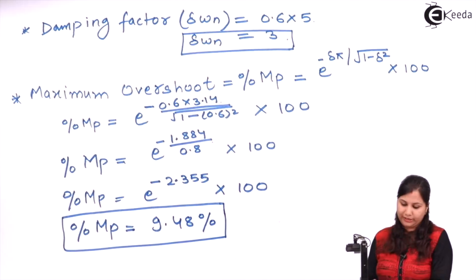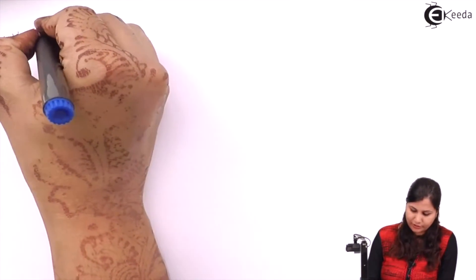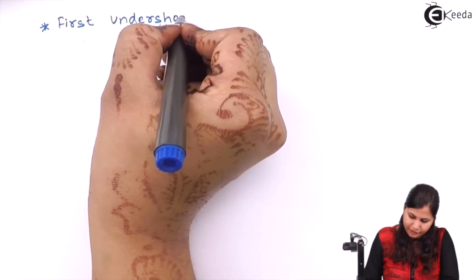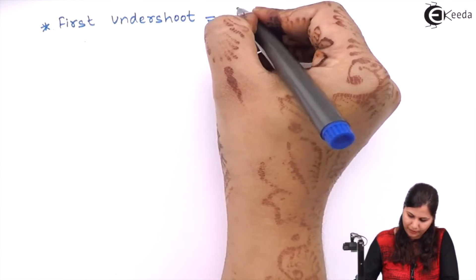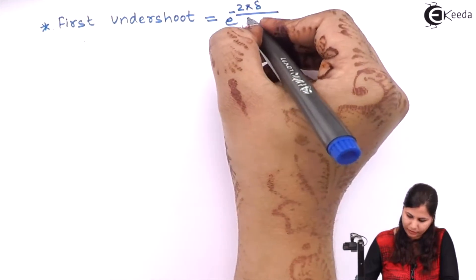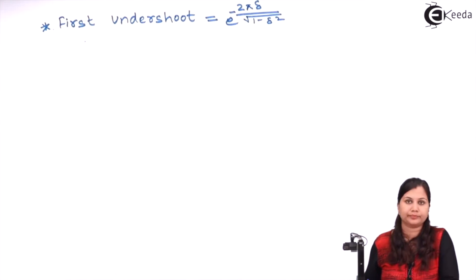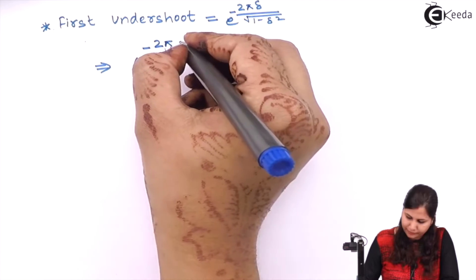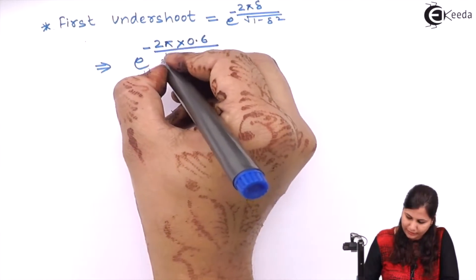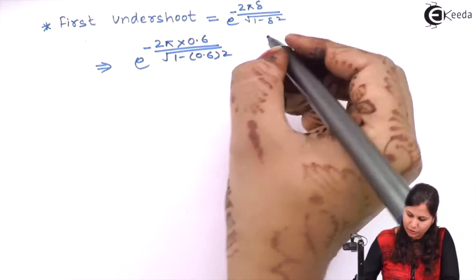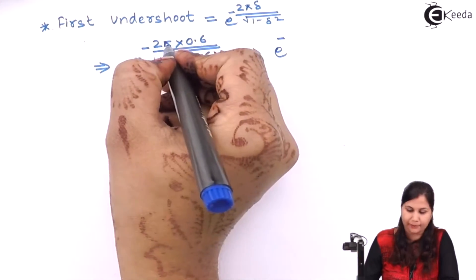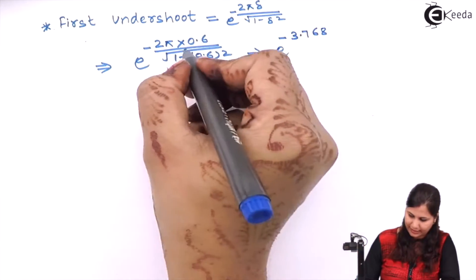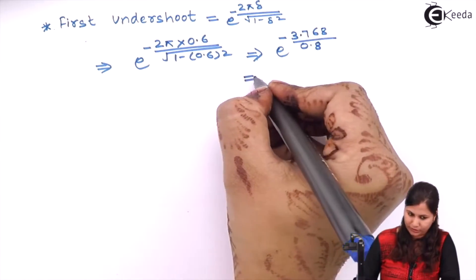The next transient response specification is first undershoot. The formula is e^(−2πδ / √(1 − δ²)). Substituting δ = 0.6: e^(−2 × 3.14 × 0.6 / √(1 − 0.36)). The numerator gives 3.768 / 0.8, and the value of this first undershoot comes out to be e^(−0.768/0.8).